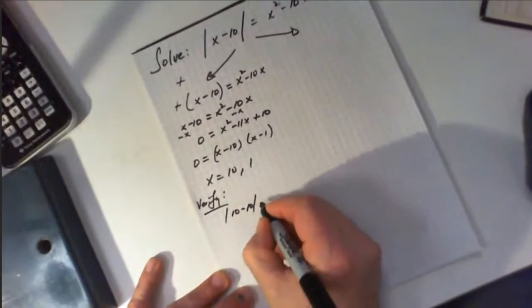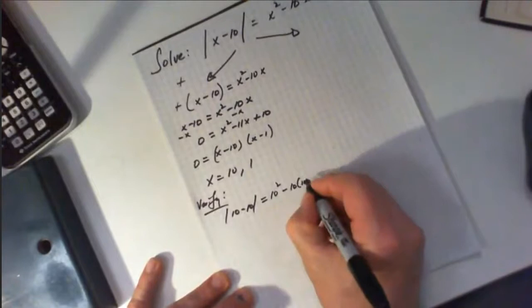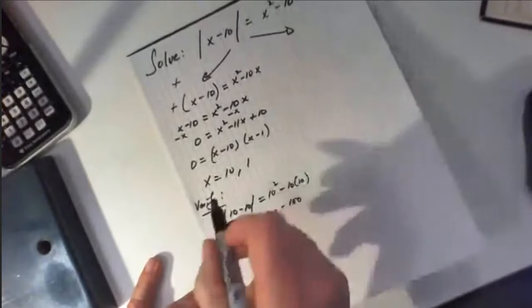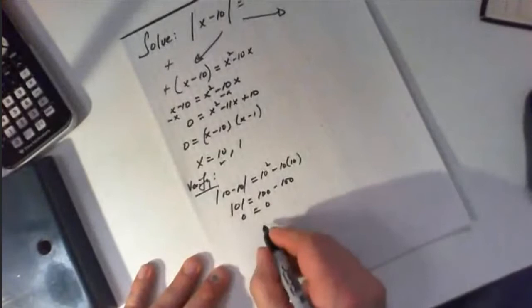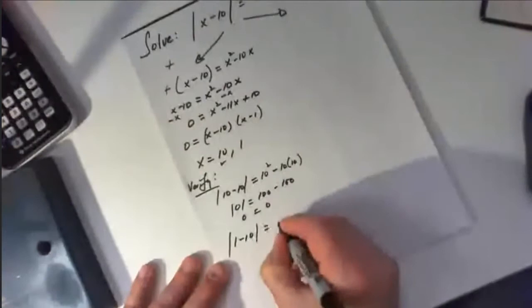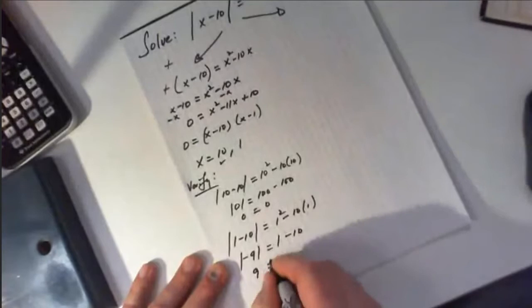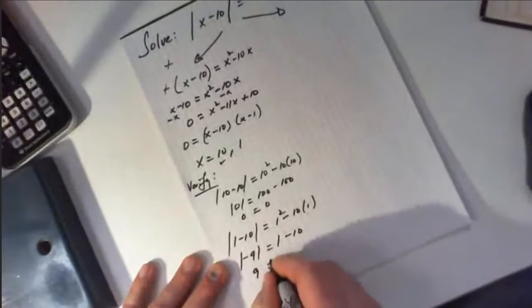Replacing x equals 10: the absolute value of 10 minus 10 equals 10 squared minus 10 times 10, which is absolute value of 0 equals 100 minus 100, so 0 equals 0. Ten checks out. For x equals 1: absolute value of 1 minus 10 equals 1 squared minus 10 times 1, giving absolute value of negative 9 versus 1 minus 10, which is 9 not equal to negative 9. So the only acceptable answer from the positive side is x equals 10.